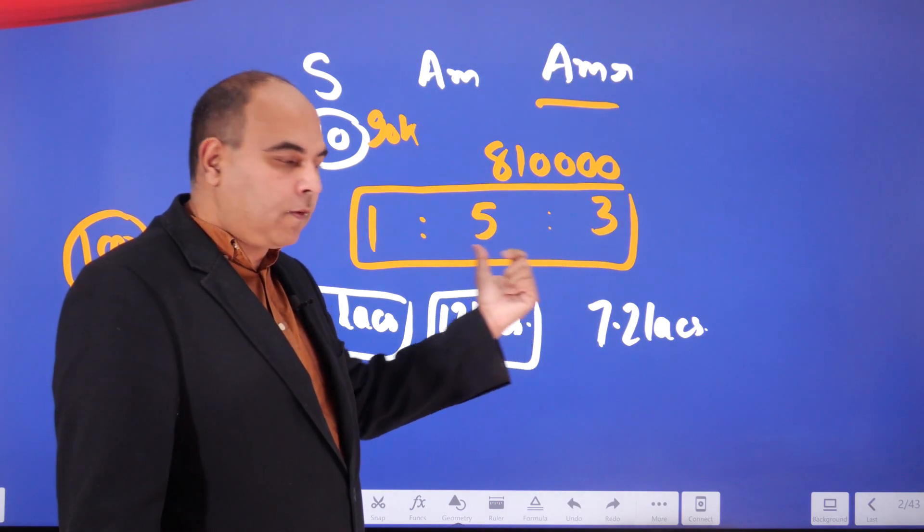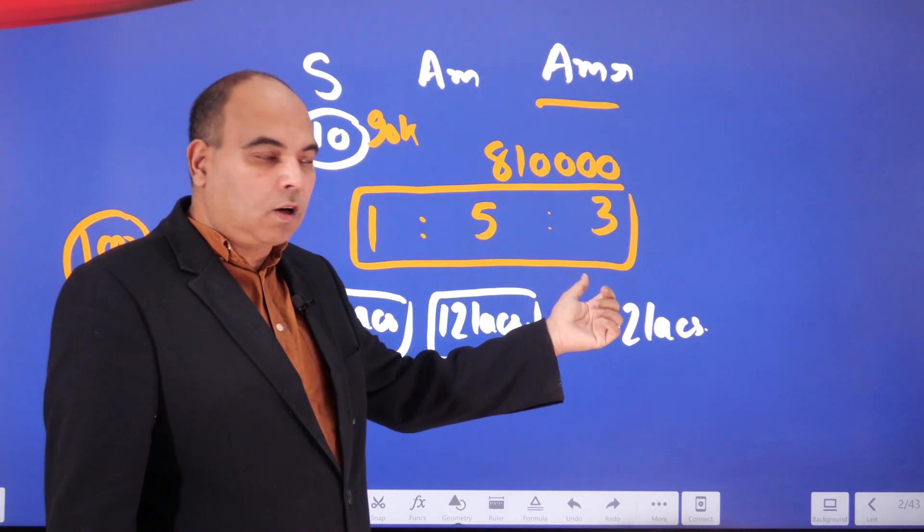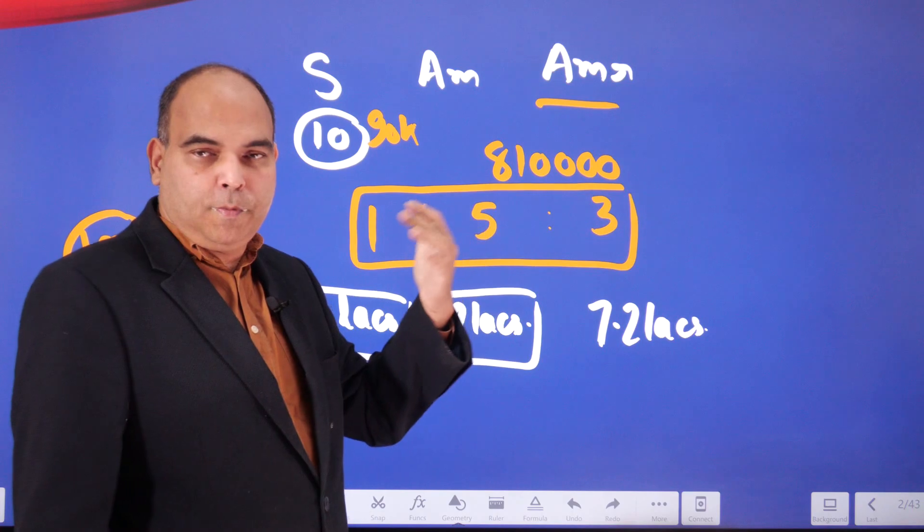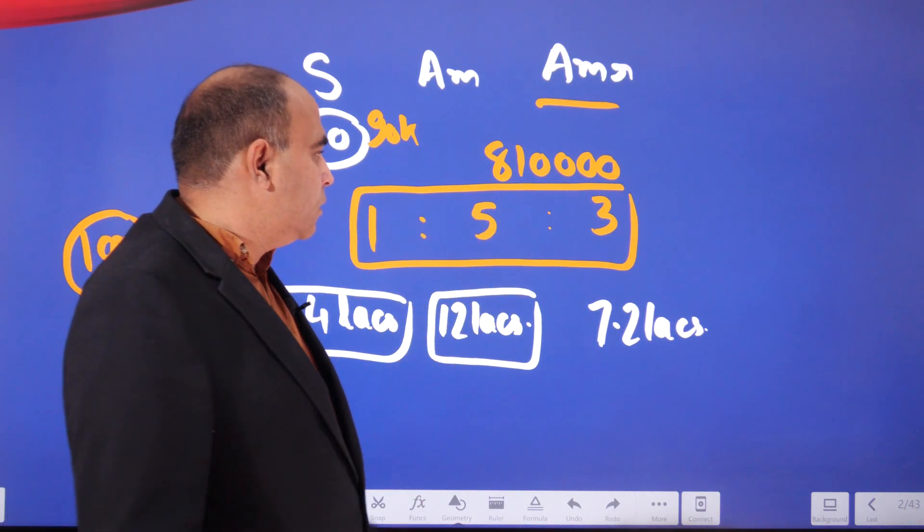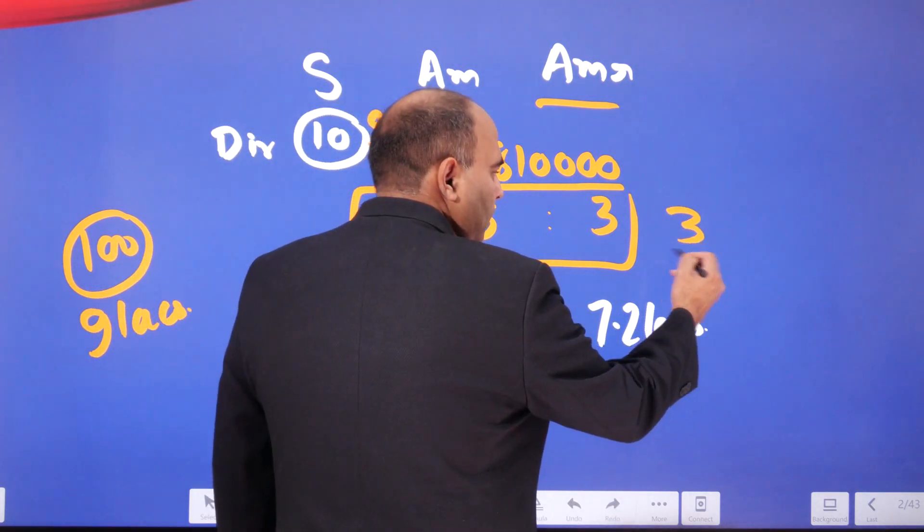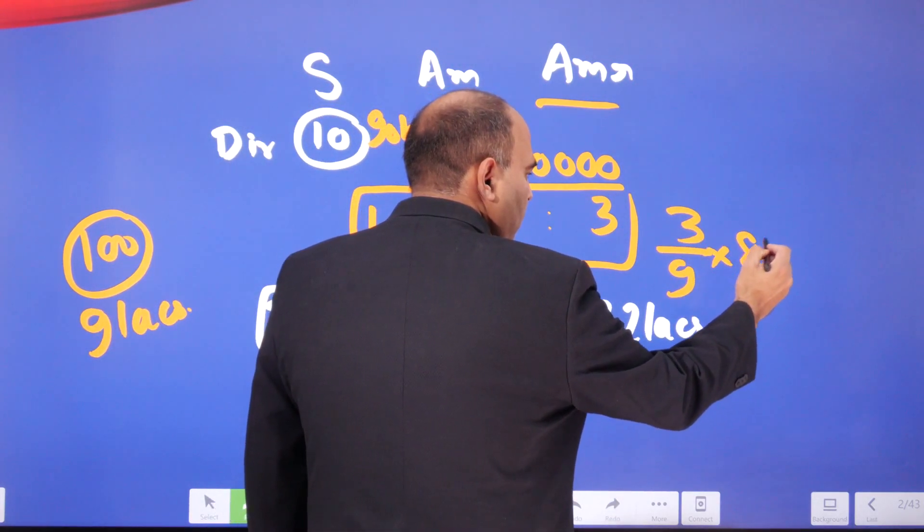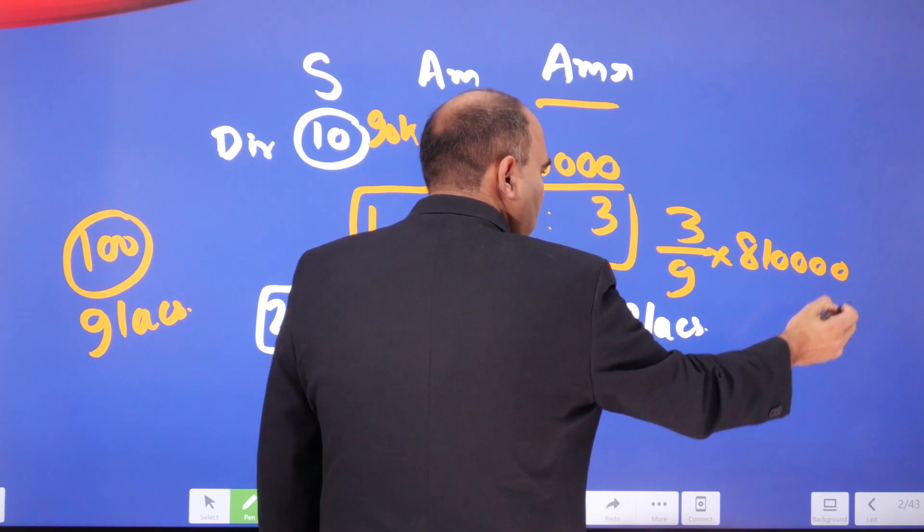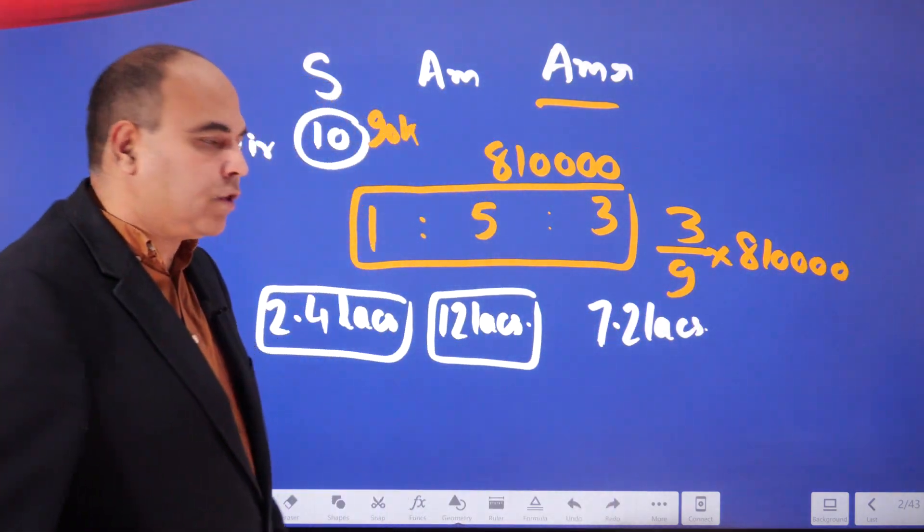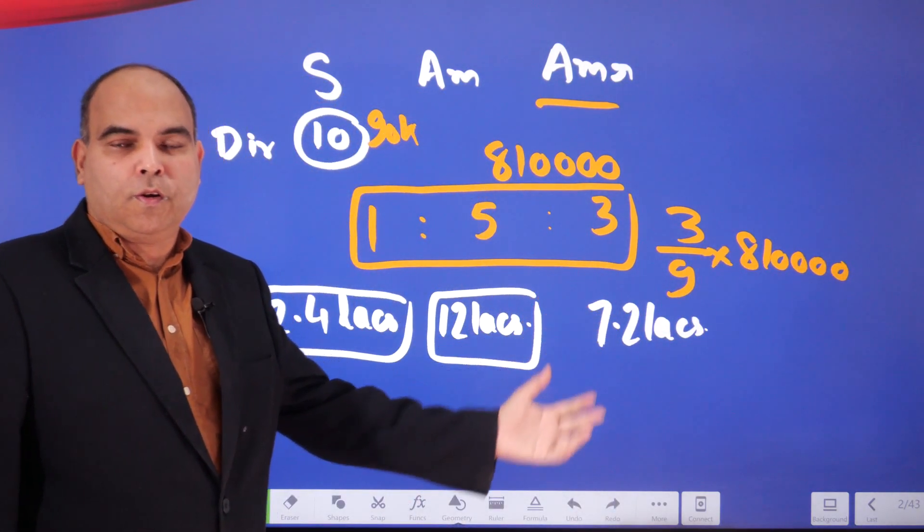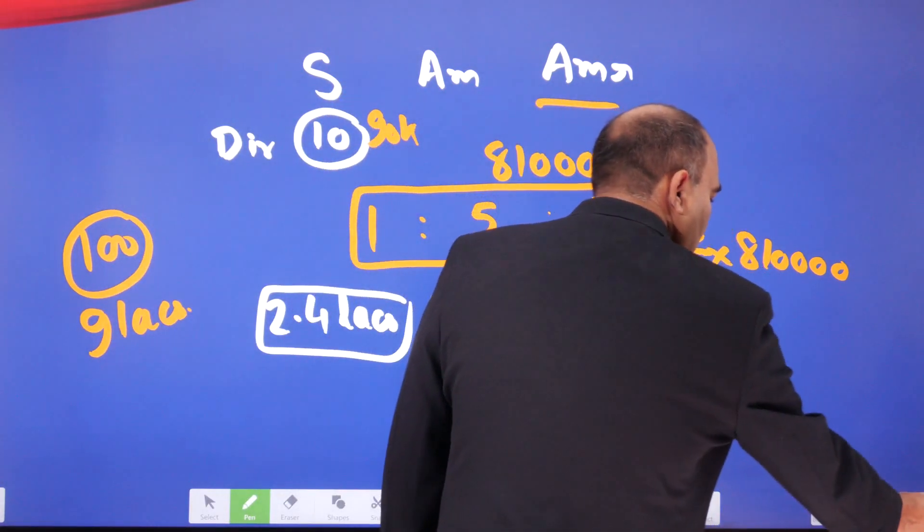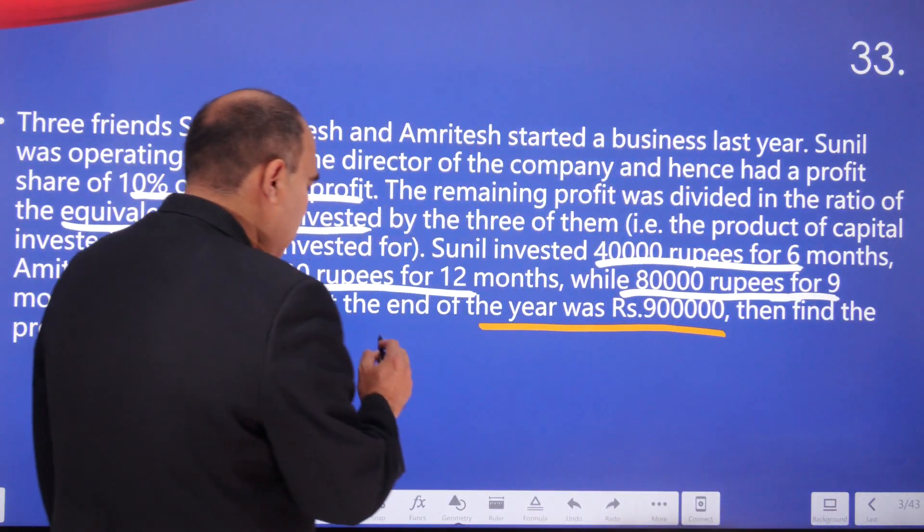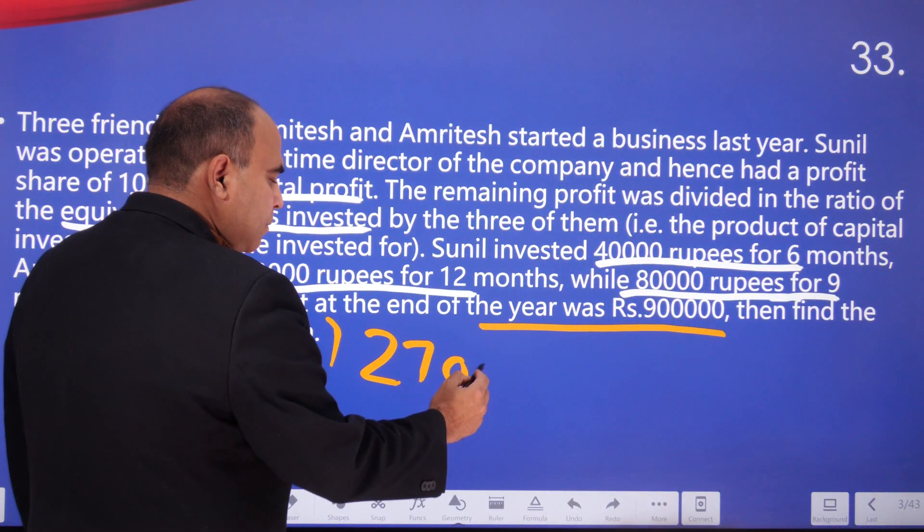Amritesh gets three out of nine parts, which is three by nine of eight lakh ten thousand, which is one third. He's going to get two lakh seventy thousand. That's the correct answer to this question.